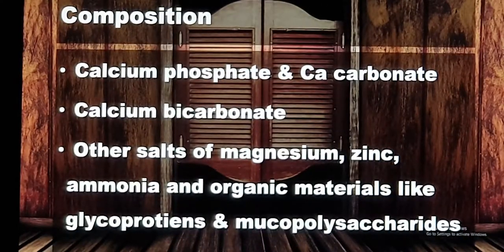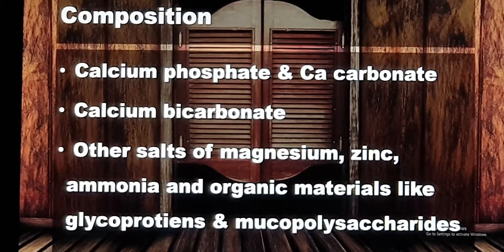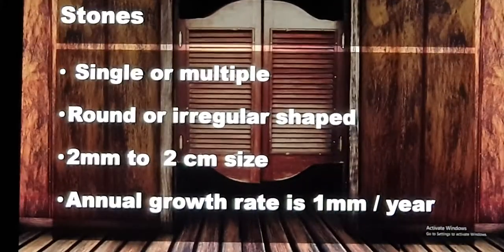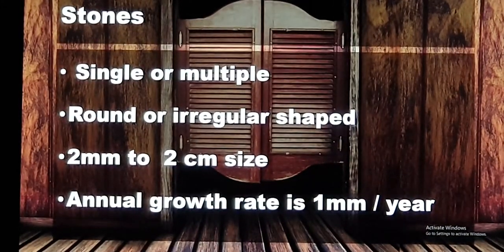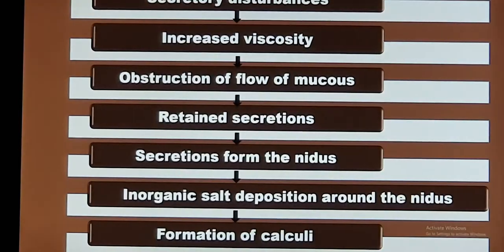Regarding the composition of the calculus: it consists of calcium phosphate, calcium carbonate, and calcium bicarbonate. Other components include salts of magnesium, zinc, and organic materials like glycoproteins and mucopolysaccharides. The calculus can be single or multiple, usually round, and size varies from 2 millimeters up to 2 centimeters.